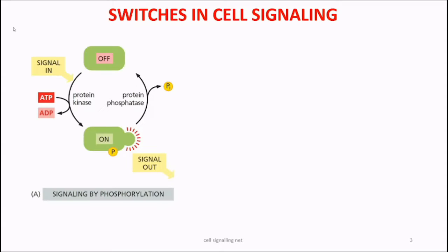The first switch is basically the change in the phosphorylation and dephosphorylation status of a protein. When a signal arrives in a cell, that signal specifically activates a group of proteins known as protein kinases. Protein kinases are a group of enzymes that transfer a phosphate group onto other proteins and activate them. The phosphate group is transferred onto serine or threonine amino acids of the target protein.